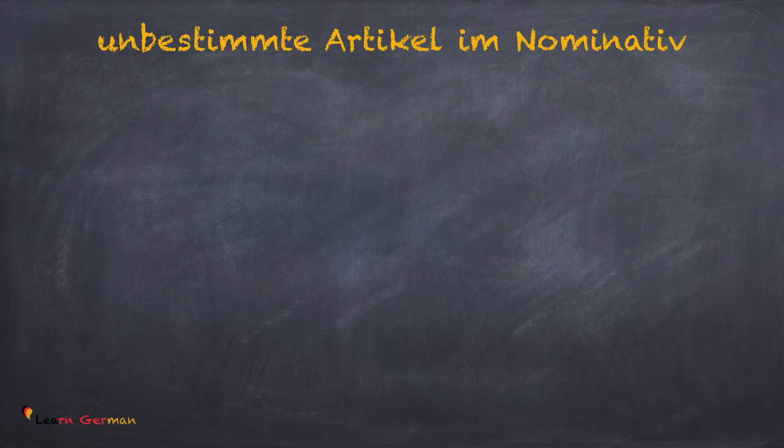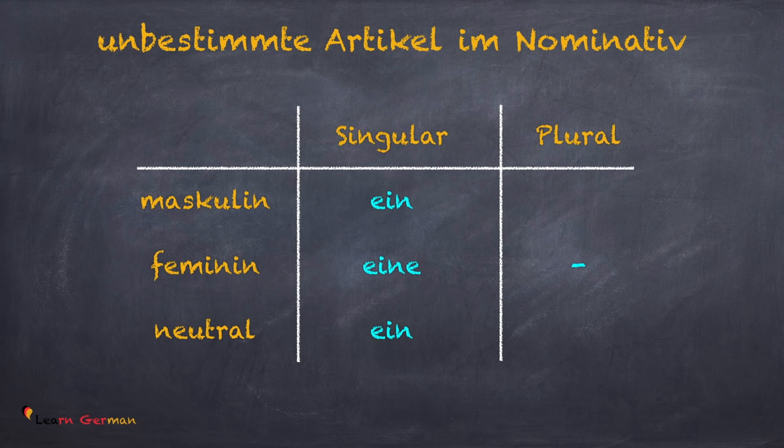Let's see what we have just learnt — Unbestimmte Artikel im Nominativ. For masculine singular, we use 'ein'. For feminine singular, we use 'eine'. And for neutral, we use the same as masculine, i.e. 'ein'. There is no unbestimmte article in the plural form.